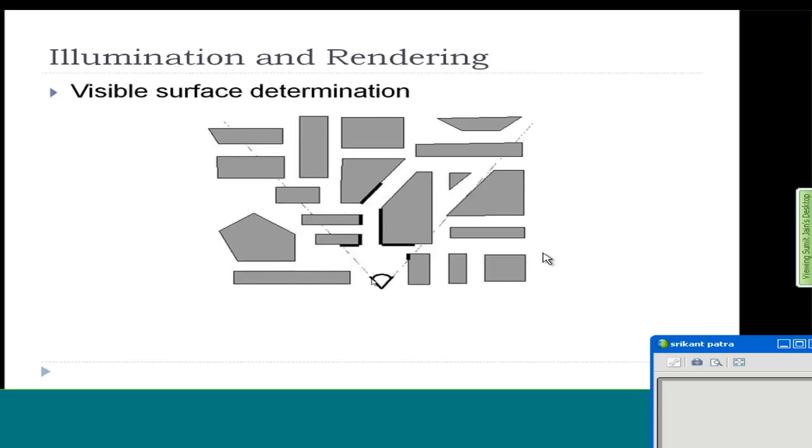This is a top-down view of a scene. This is your viewer or virtual camera, and these are all the objects in the scene. This is the field of view or how much you can see through your eyes, and the dark lines, if you can see on the screen, are the only things that your camera will be able to see. Everything else will be occluded and not seen if you click an image from there. Determining what surfaces to show in the scene is a hard problem.